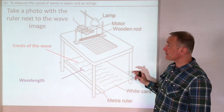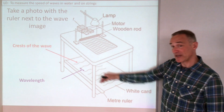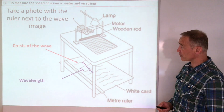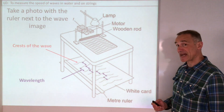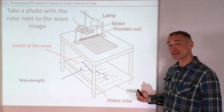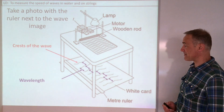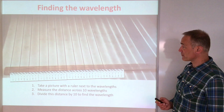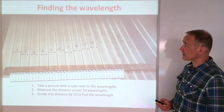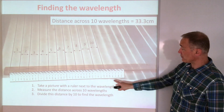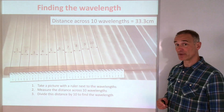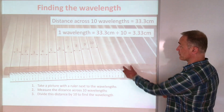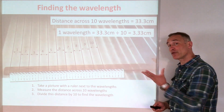You need to take a photograph because the waves will be moving. Once you've got your photograph with your ruler, you can measure across as many wavelengths as you can. The best approach in the exam is to measure across ten — it's an easy number to remember. I measured across ten wavelengths and got 33.3 centimetres, so dividing by ten gives a wavelength of 3.3 centimetres.